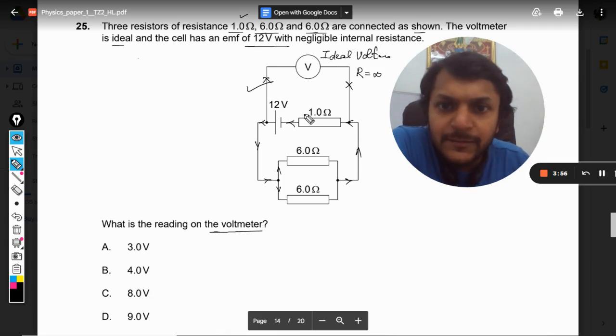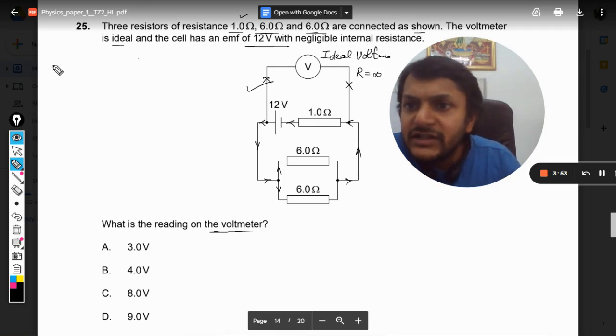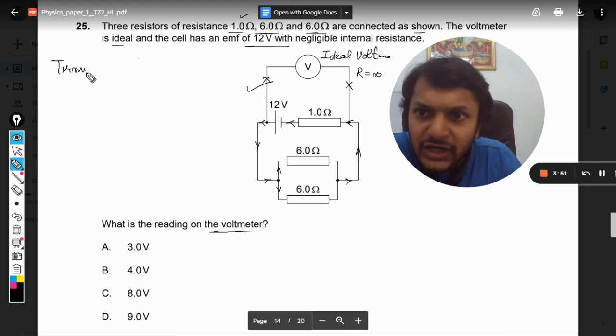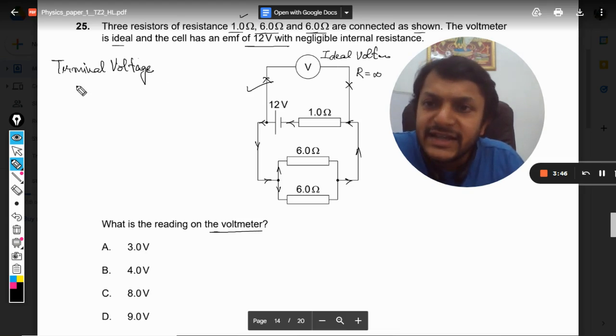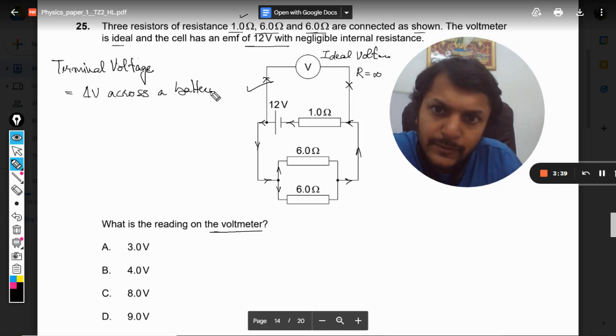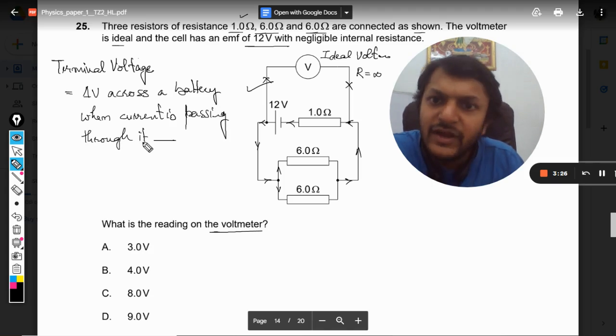So to find the reading of the voltmeter, there is a concept here. There is a concept of terminal voltage or terminal potential difference. Now what is this? This is the potential difference across a battery when current is passing through it.